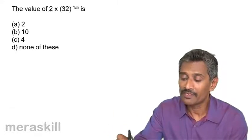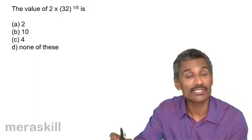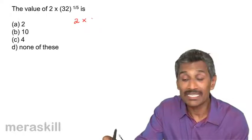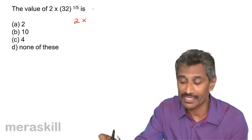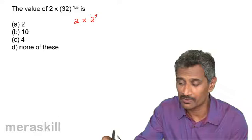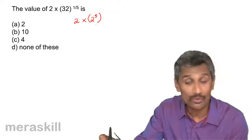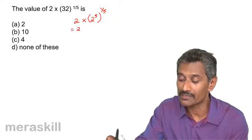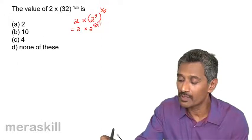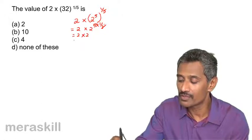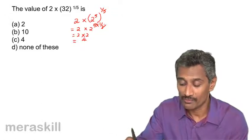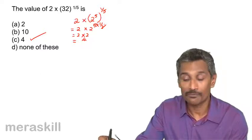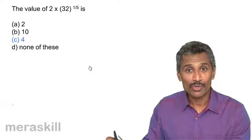Next example: the value of 2 × 32 raised to 1 by 5. The 2 remains as it is. Now 32 can be written as 2 raised to 5, so we have 2 × (2 raised to 5) the whole raised to 1 by 5. Using the power of power rule, this becomes 2 × 2 raised to (5 × 1/5), which is 2 × 2 raised to 1 = 2 × 2 = 4. So the right answer is 4.